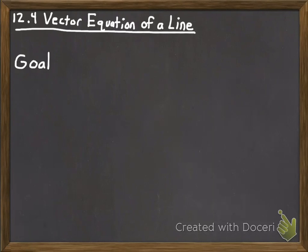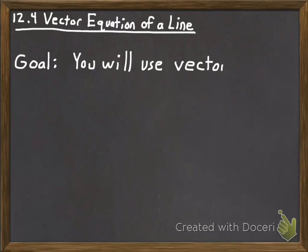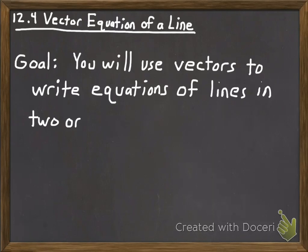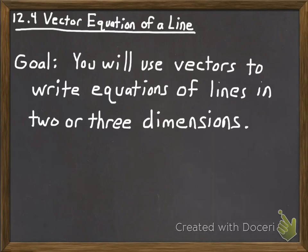We're moving on to section 12-4 now. What we're going to start doing in this section is working with equations of lines, but a different form than you're used to — not point-slope form or slope-intercept form. We're going to look at how you write the vector equation of a line, using vectors to write equations of lines in either two or three dimensions.